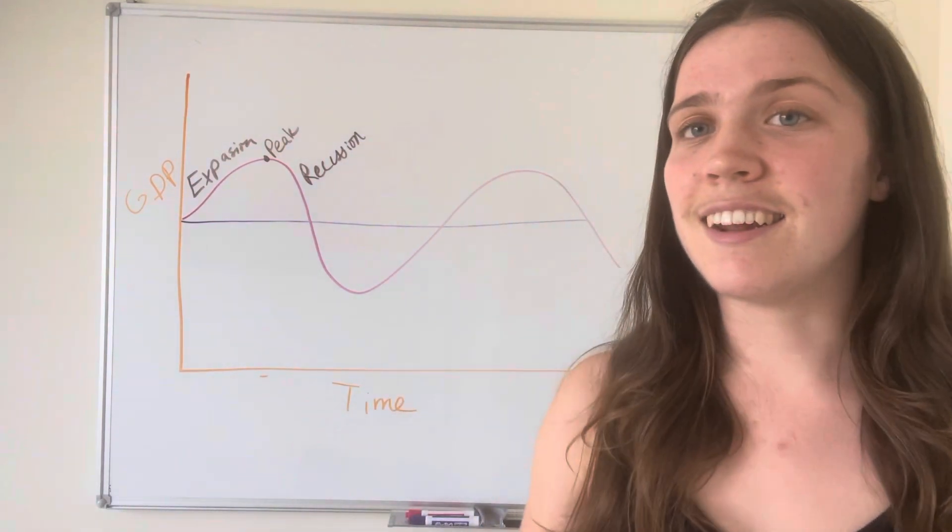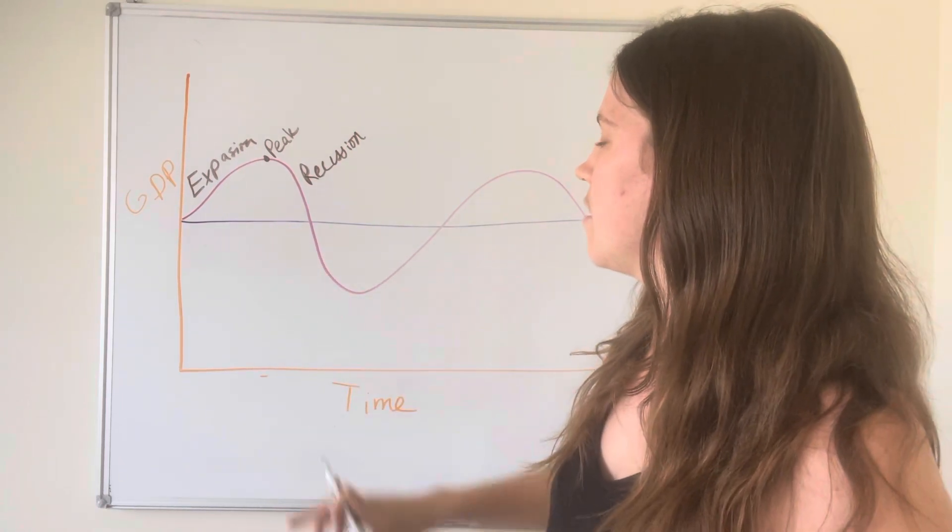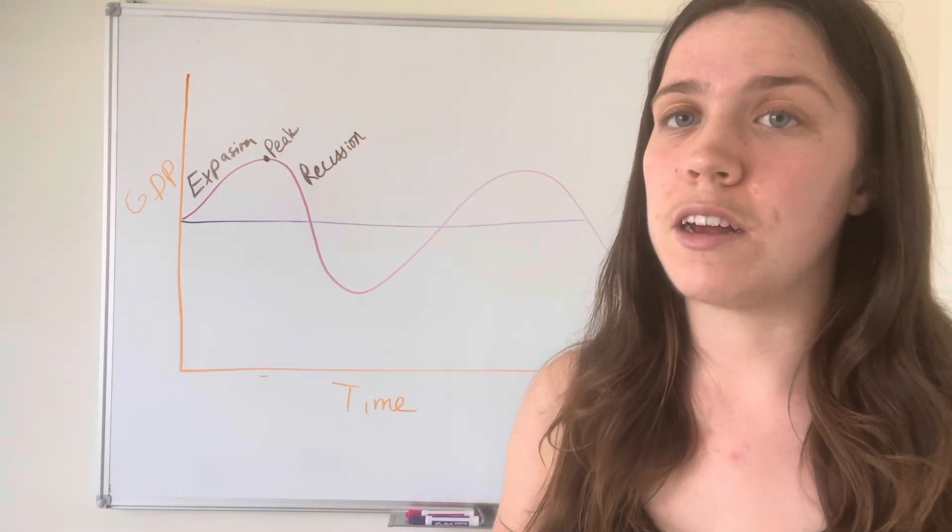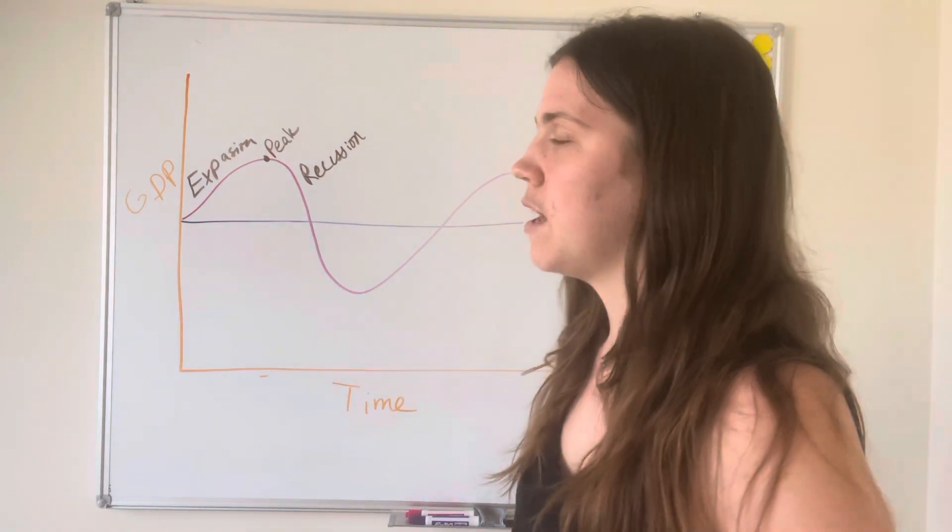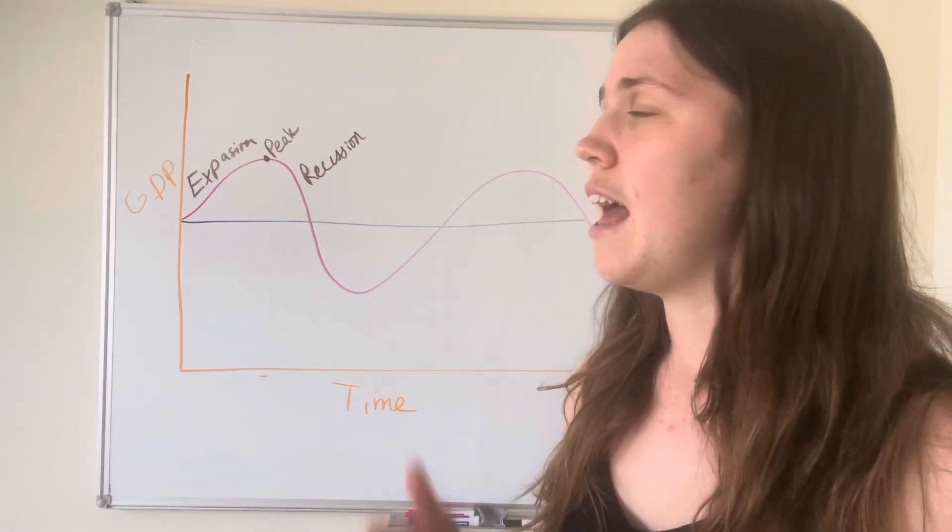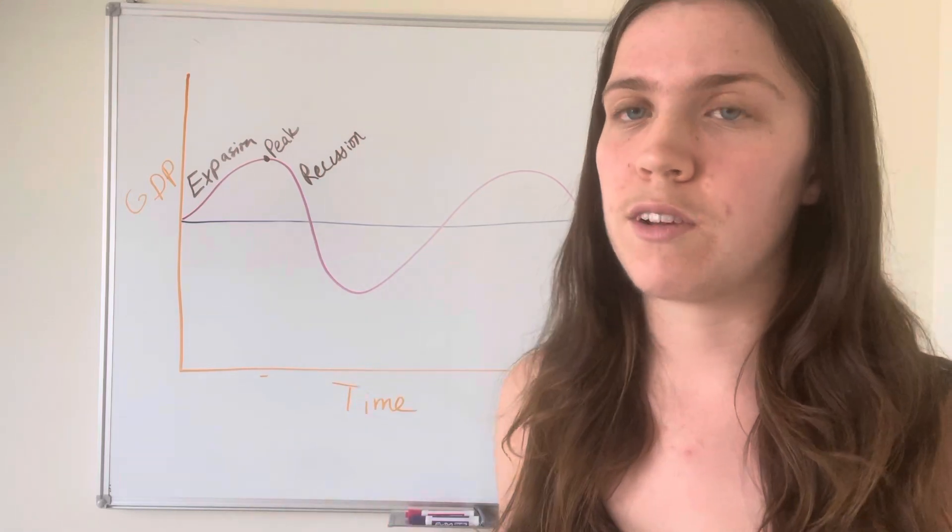All right, the next thing you see our graph doing is going below our starting GDP and continuing to decline. And so this is called a depression. And a depression is a pretty intense period of economic strain, unemployment, declining GDP that lasts over a course of several years.